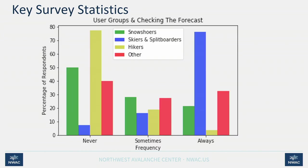This plot shows different user groups and their habits with checking the forecast. The survey asked: how often do you check the forecast before heading out — never, sometimes, or always? Skiers and splitboarders trend heavily toward always, which is great. But other user groups are more skewed toward never. The other user group consists of ice climbers, people towing sleds, or users who don't identify as snowshoer, skier, splitboarder, or hiker.